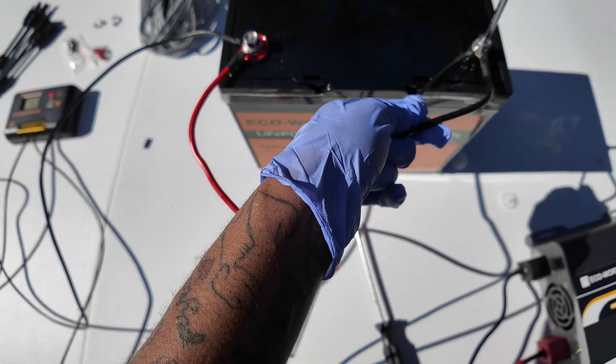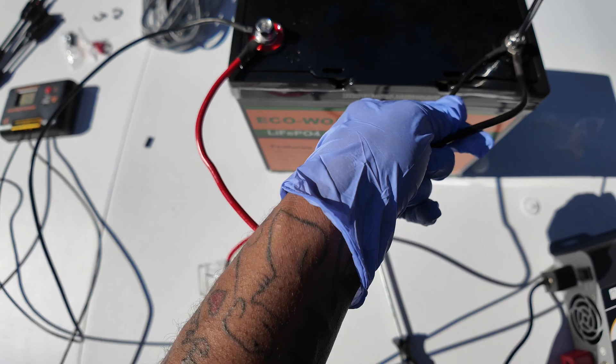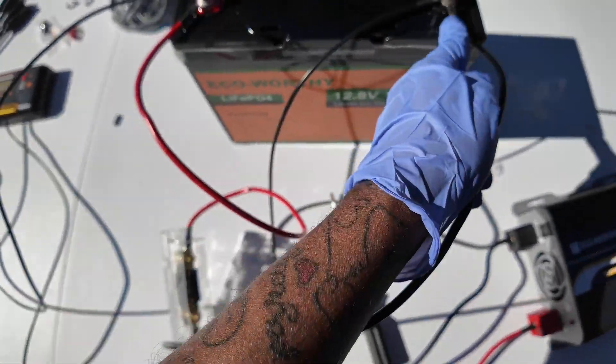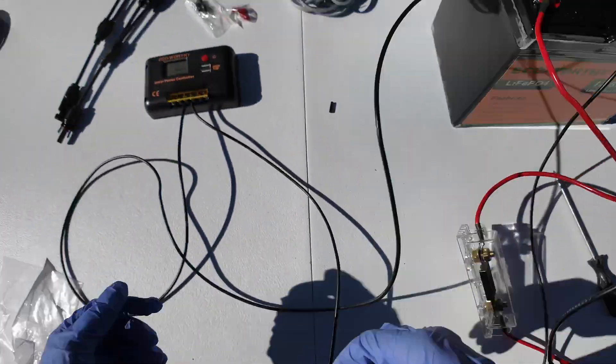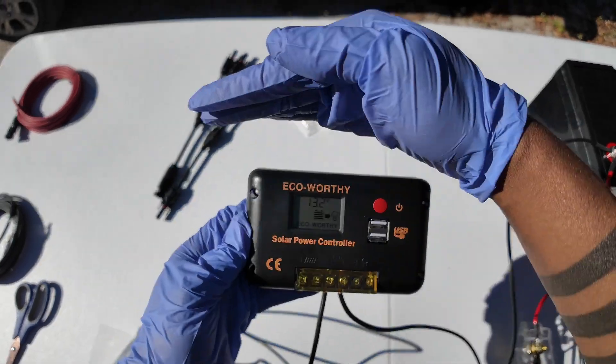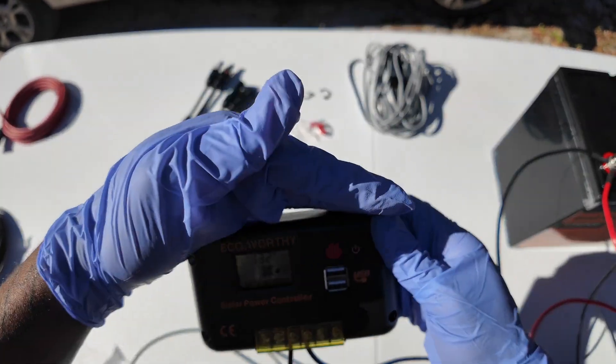Once all the cables are connected to the battery, you may get a little spark. Don't panic, don't panic. The battery and the power controller are now connected. As you can see, the display is now powered on.